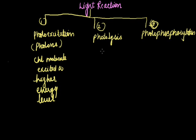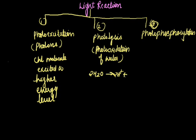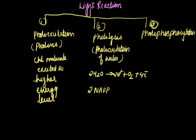The second step included in the light reaction is called photolysis, also called photo-oxidation of water. This is a reaction in which the water molecule breaks up into hydrogen ions and an oxygen molecule. Oxygen is liberated here as a byproduct, and hydrogen ions are used for the reduction of NADP. When NADP receives hydrogen ions, it is reduced to NADPH2.